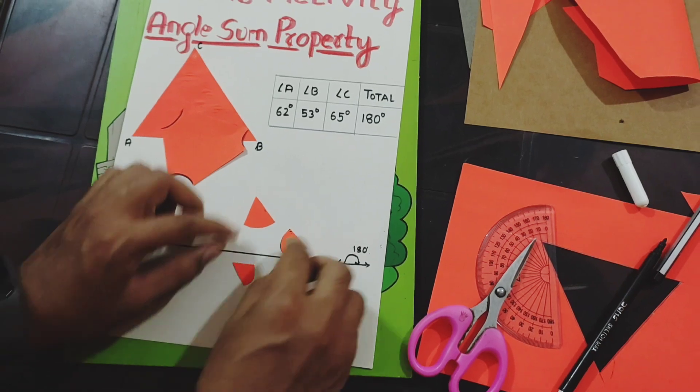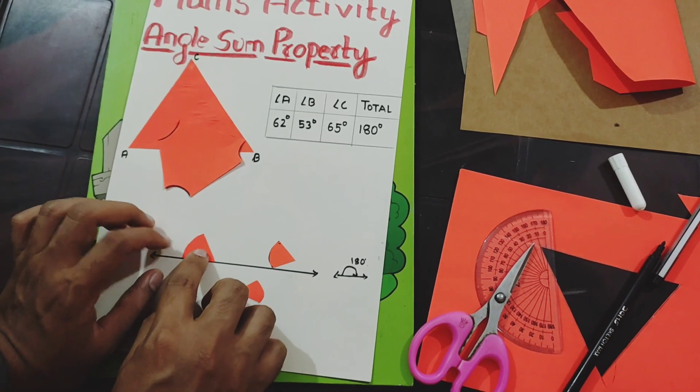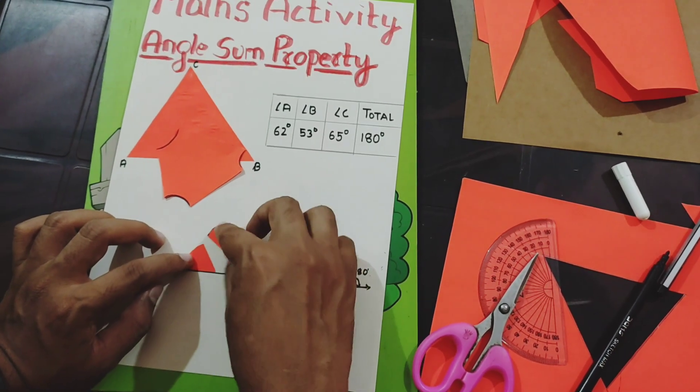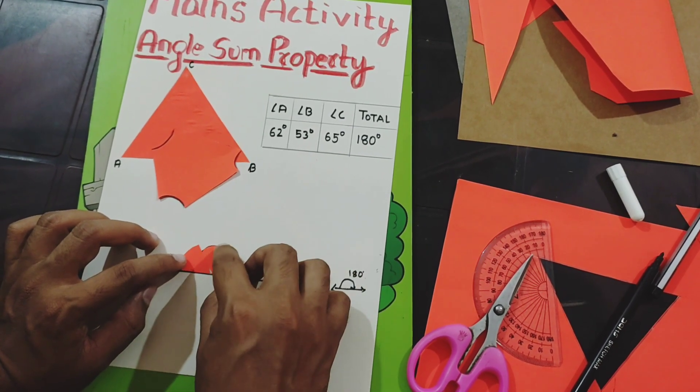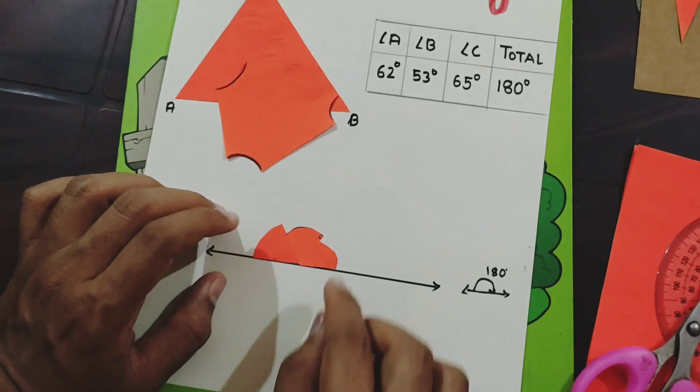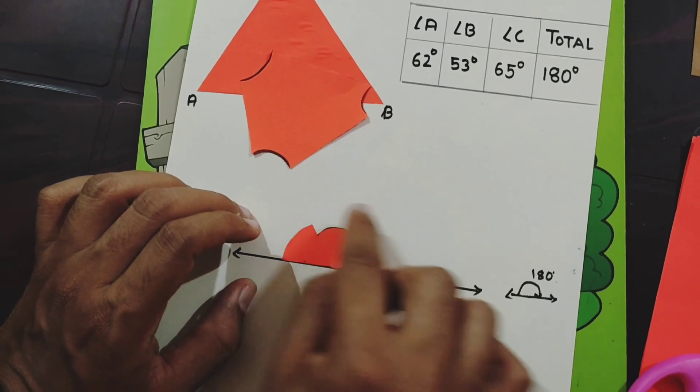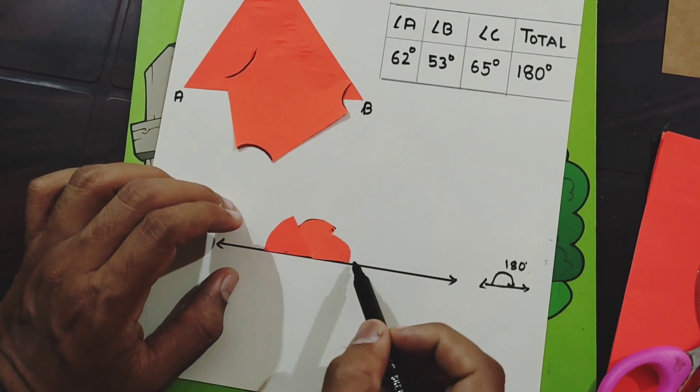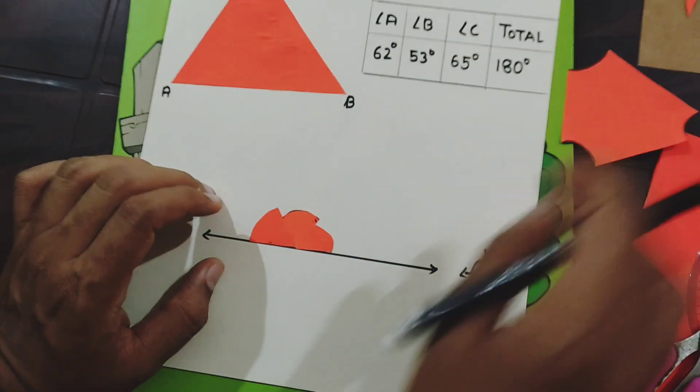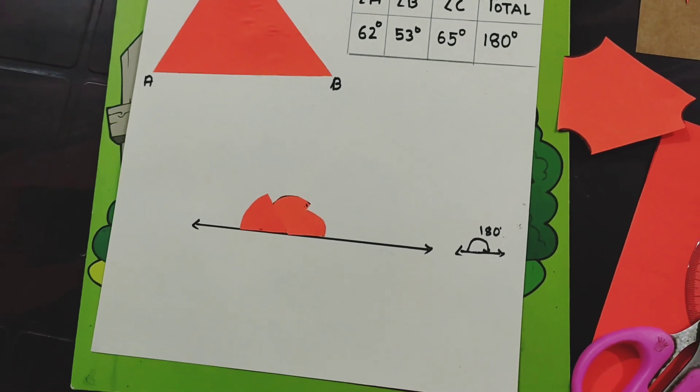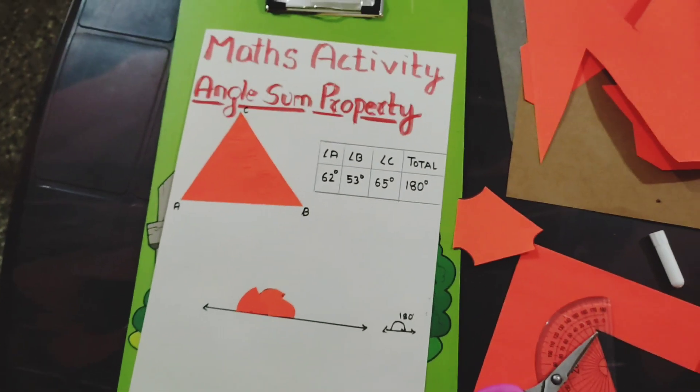Now see what I'm doing on this line. When I connect all these angle pieces, it becomes a straight line. All these angles together form a semicircle on the straight line. You can even put gum and stick this, then put it in your classwork. This is how we can prove the angle sum property of triangle.